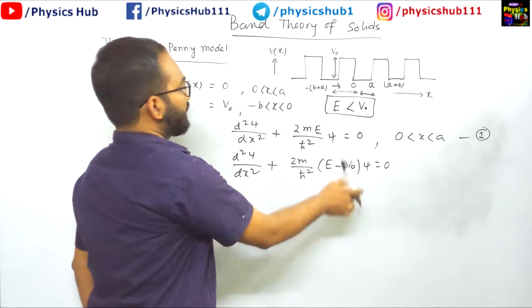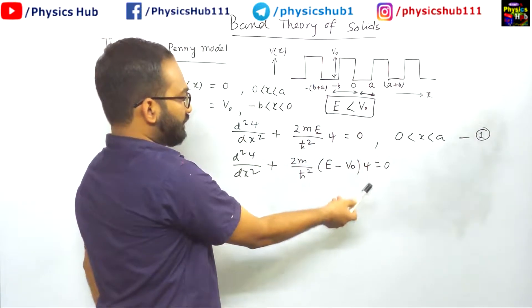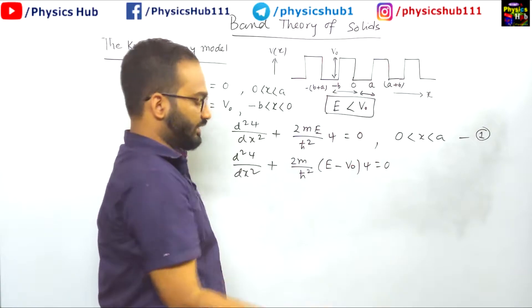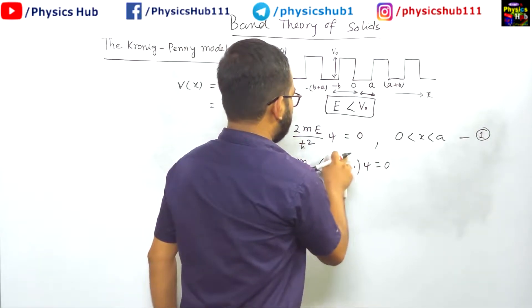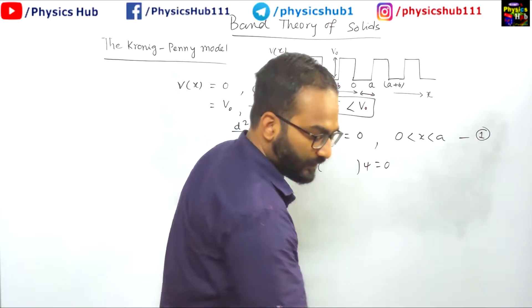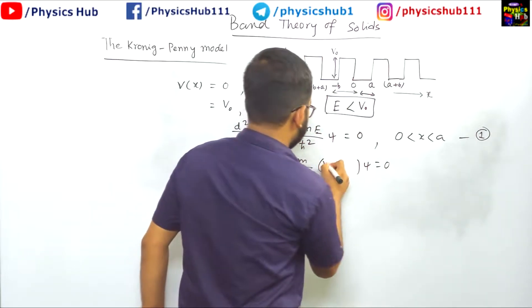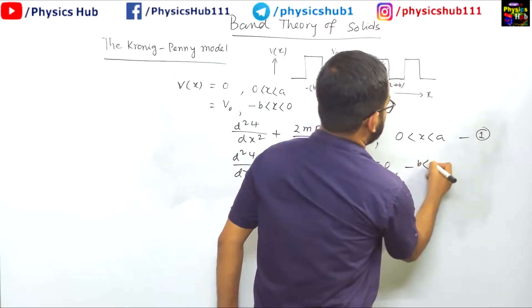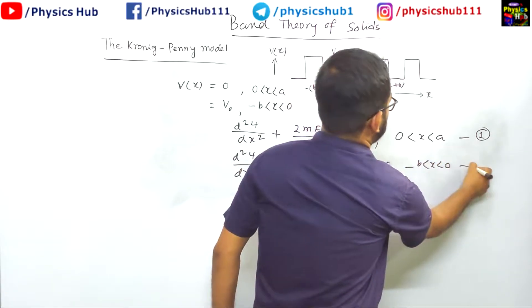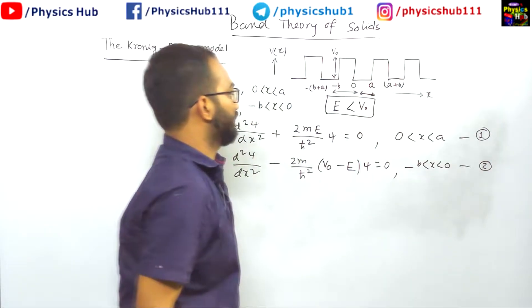But as we have considered E is less than V₀, so we have to write the converse thing means we have to write it in this way: V₀ minus E and the minus sign will come here. Okay, this is in region minus B less than x less than 0. So this is equation number 2.